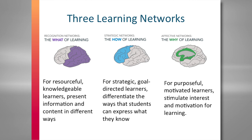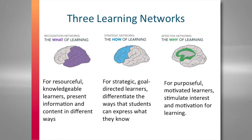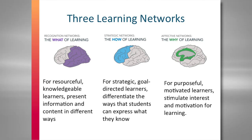The good news, grounded in neuroscience, is that some variability in learning is actually systematic and you can plan for it. The basic building blocks of Universal Design for Learning are that people differ systematically in three different ways.